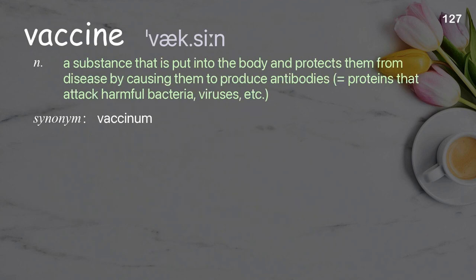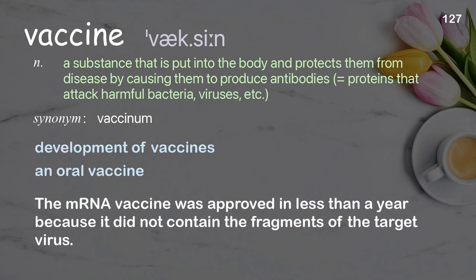Vaccine: a substance that is put into the body and protects them from disease by causing them to produce antibodies — proteins that attack harmful bacteria, viruses, etc. Examples: development of vaccines, an oral vaccine. The mRNA vaccine was approved in less than a year because it did not contain the fragments of the target virus.